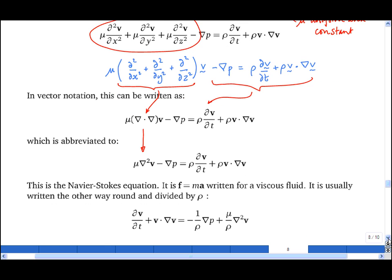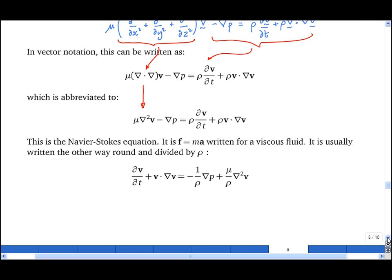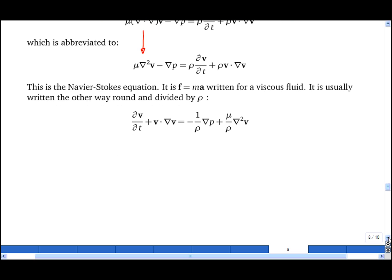This is the Navier-Stokes equation. As a reminder, it is simply F equals mA written for a viscous fluid. It is usually written the other way around and divided by rho, and we can derive the equations for Poiseuille flow and Couette flow directly from the Navier-Stokes equation.